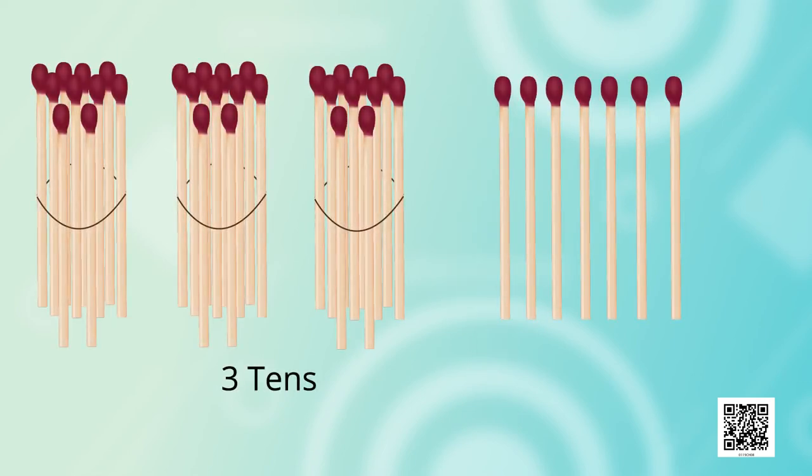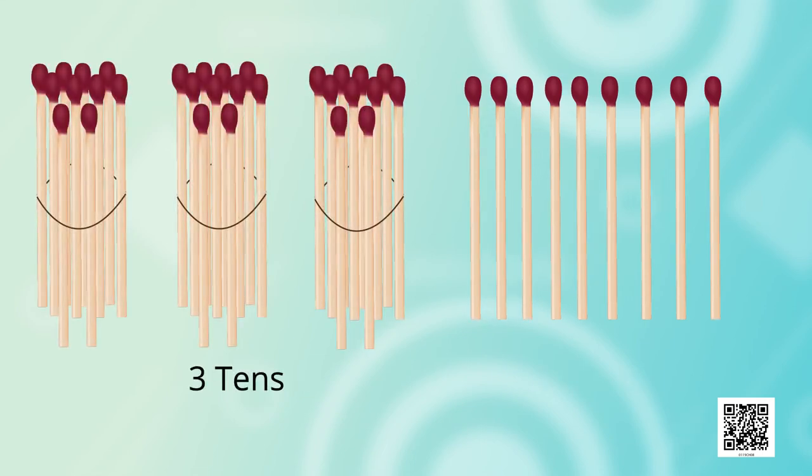2 tens and 1, 2, 3, 4, 5, 6. 4 tens and 6 ones. That is 46. 4 tens and no ones. That is 40. 3 tens and 1, 2, 3, 4, 5, 6, 7. 7 ones means 37.